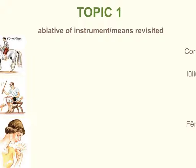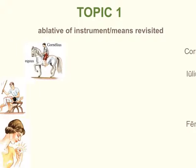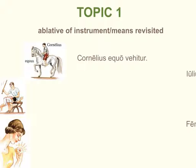Here's our first example. Cornelius vehitur — Cornelius is carried, Cornelius is transported. By means of what? Equo — by means of a horse, or in other words, on a horse. Cornelius equo vehitur.